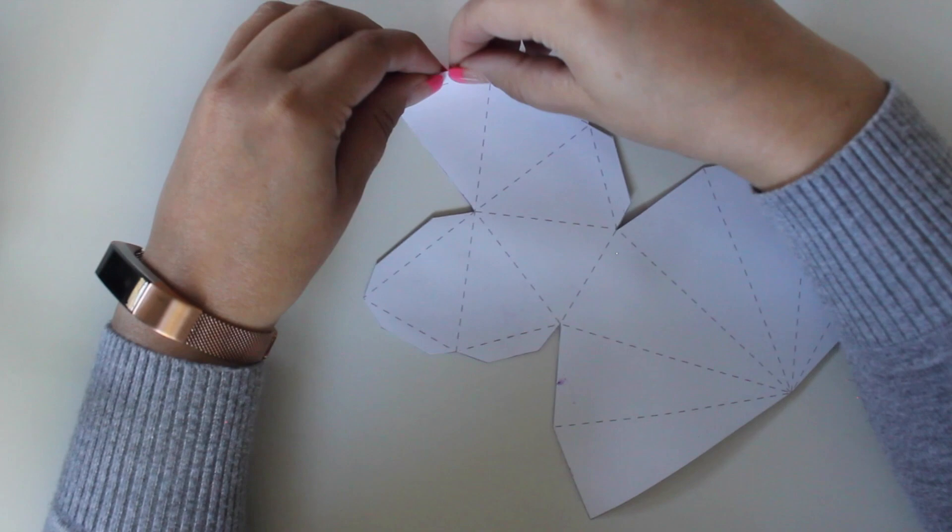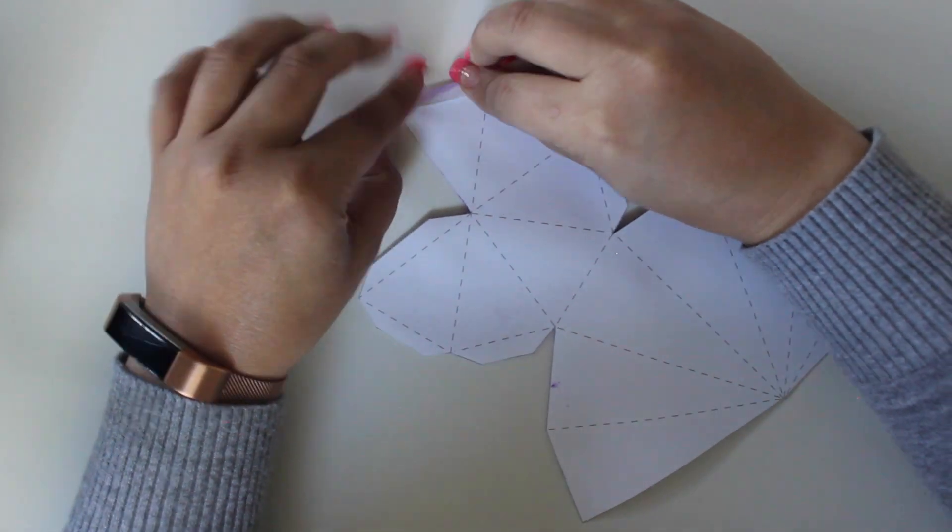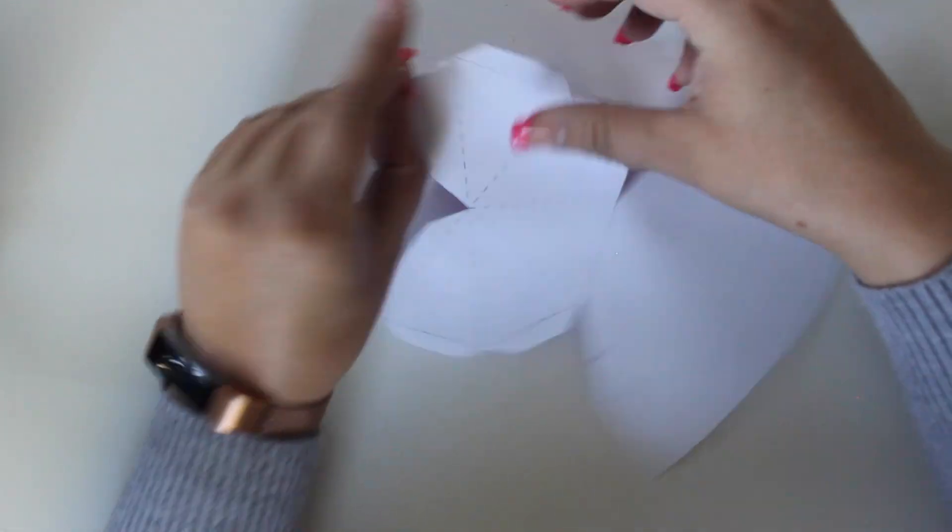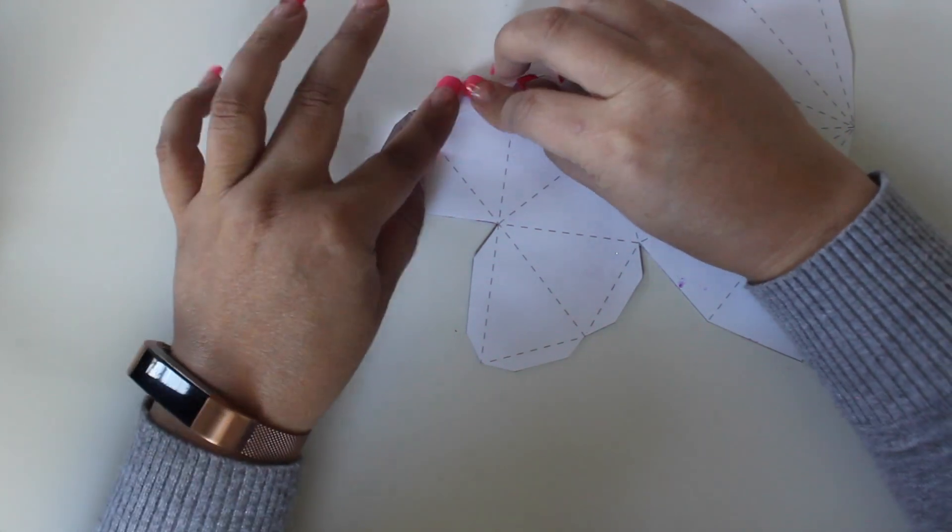Then turn the paper over so you can see the printed lines. Fold inward along the dotted lines. Crease to create sharp edges.